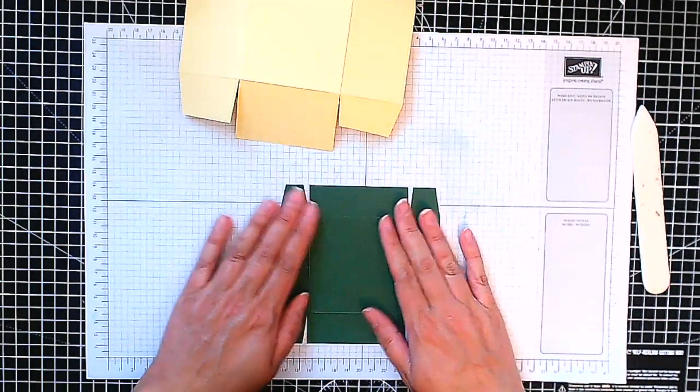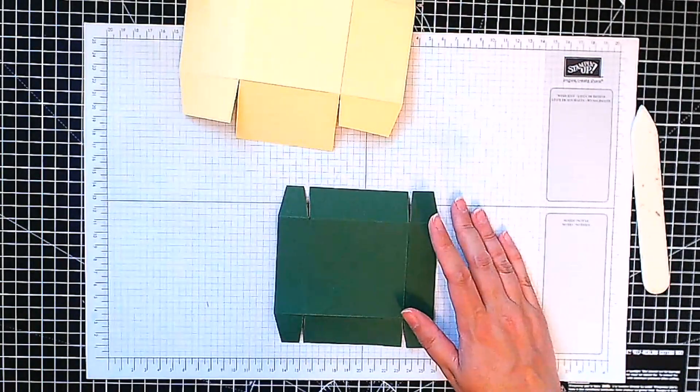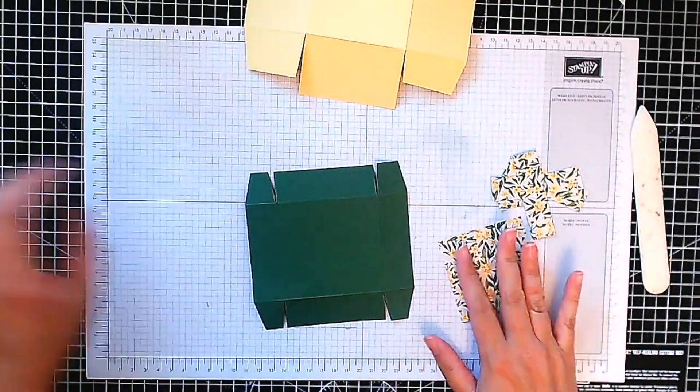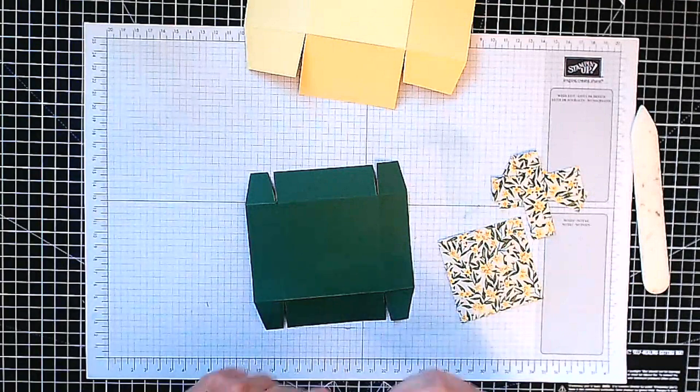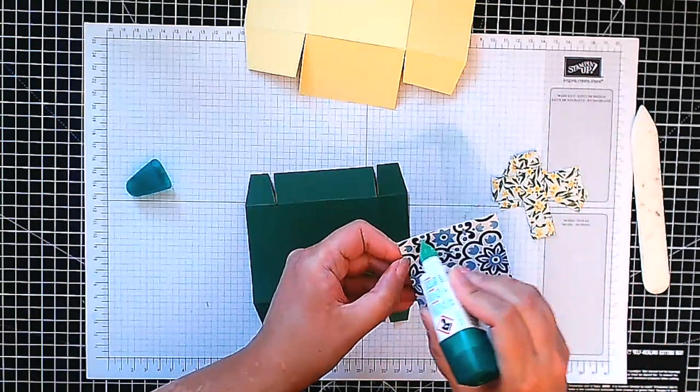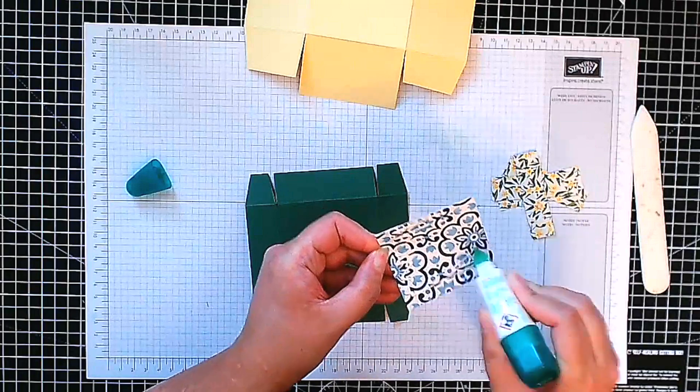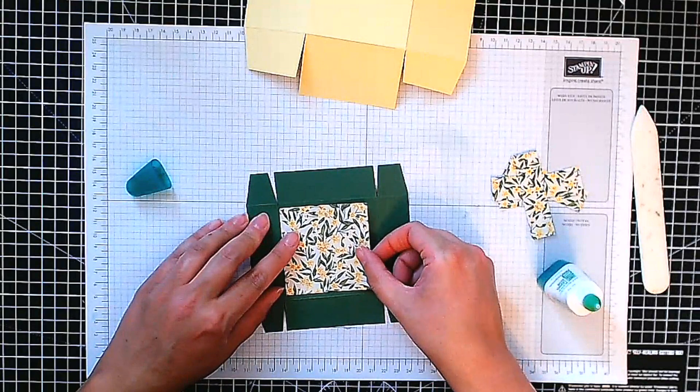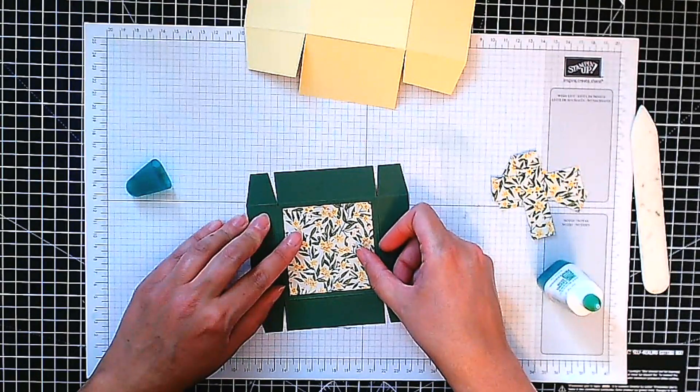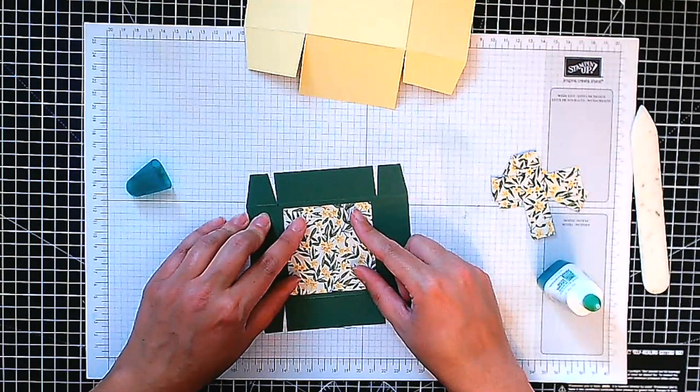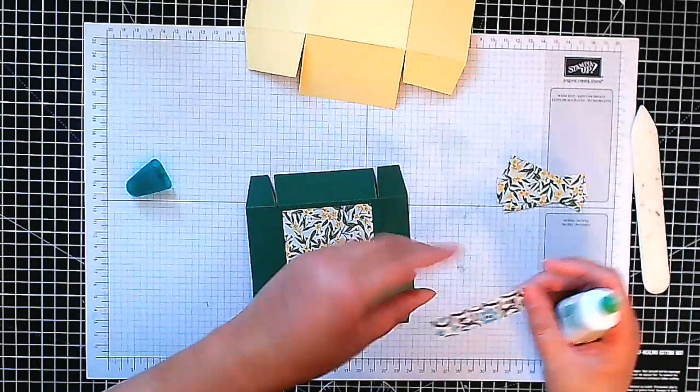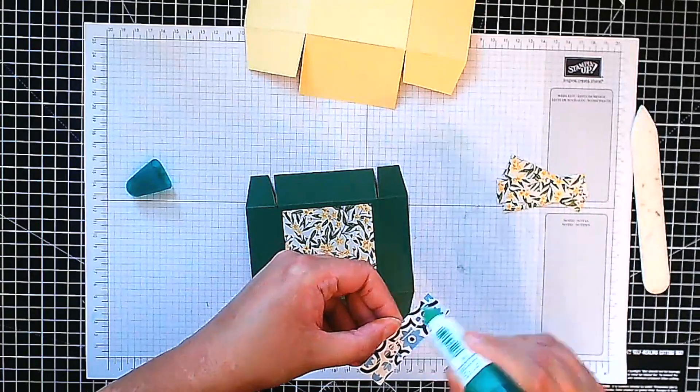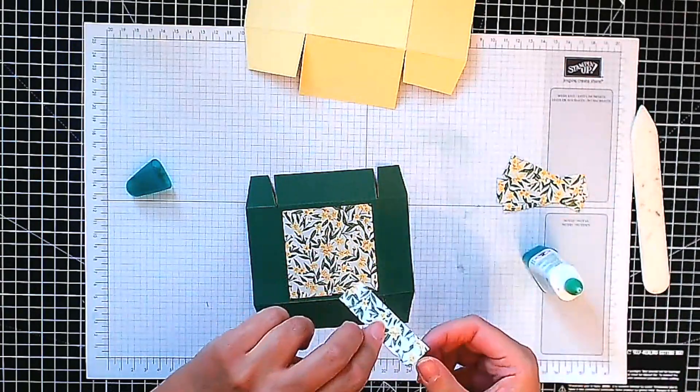And I'm going to put my designer series paper down before I make up our box. So this is the same pattern, same collection, just a different pattern I should say. And I'm going to use this side. I like the swirls better personally, but you can use whatever floats your boat. Just stick that down. And the reason doing this before we do anything else is that it's just easier.